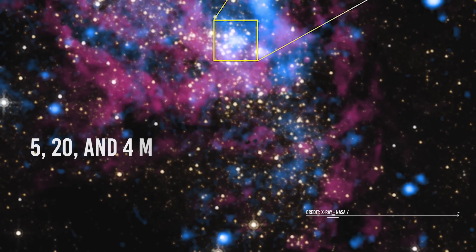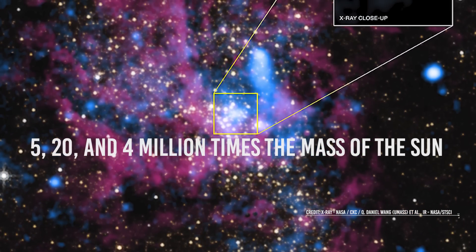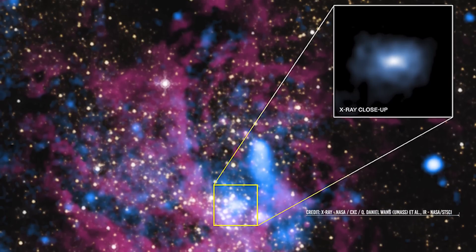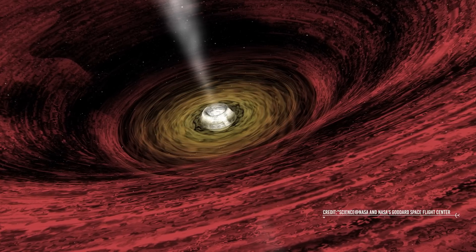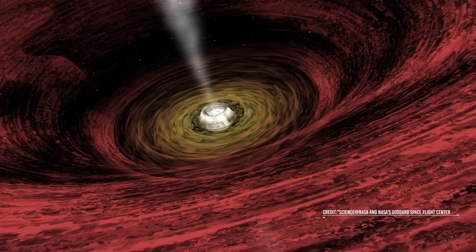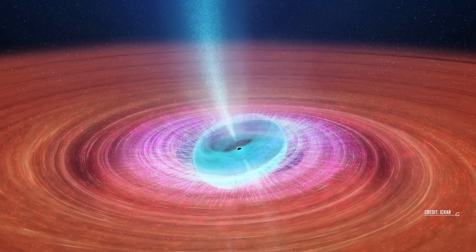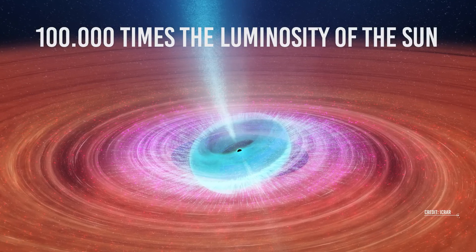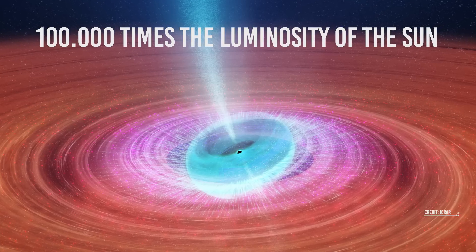Based on models of black holes clocking in at 5, 20, and 4 million times the mass of the Sun, which is the mass of Sagittarius A, the supermassive black hole at the heart of the Milky Way, Shao and colleagues were able to determine that a sphere of satellites would be able to effectively harvest energy from some of these processes. An accretion disk may accumulate the most light, reaching 100,000 times the luminosity of the Sun, enough to sustain a Type II civilization.